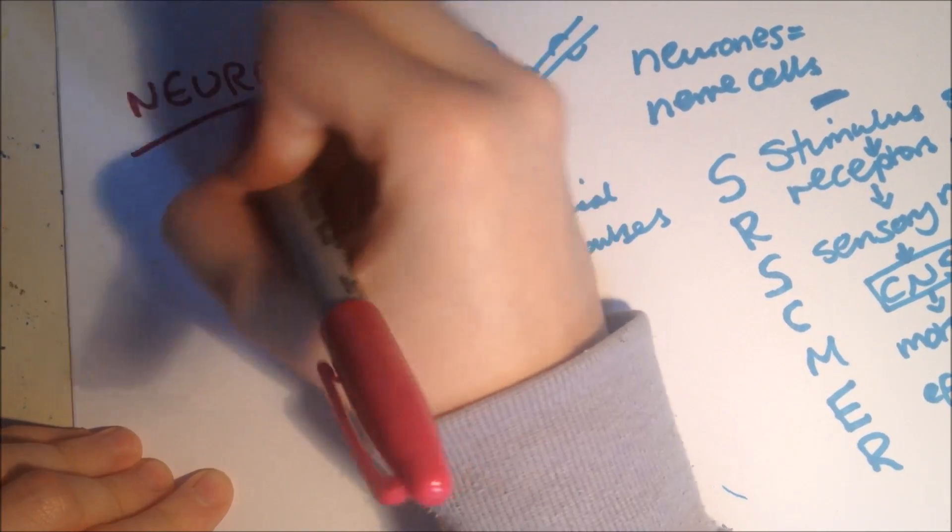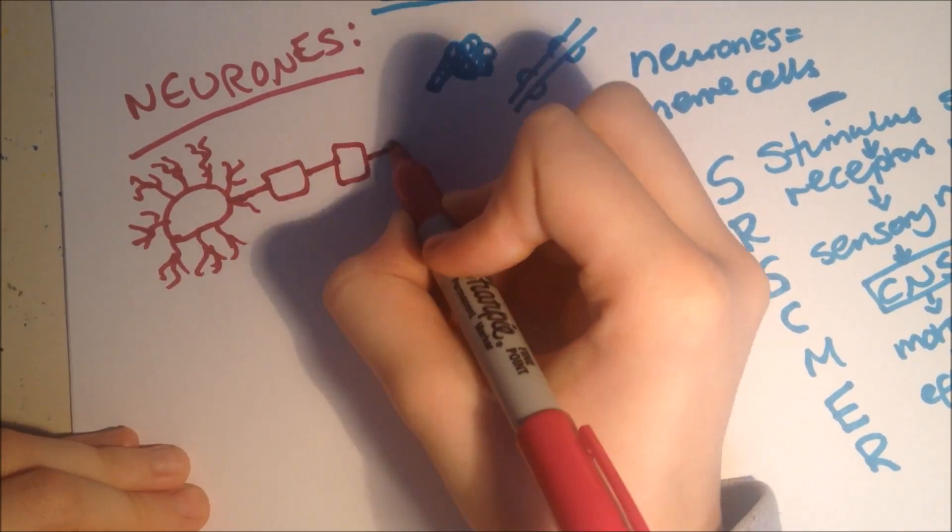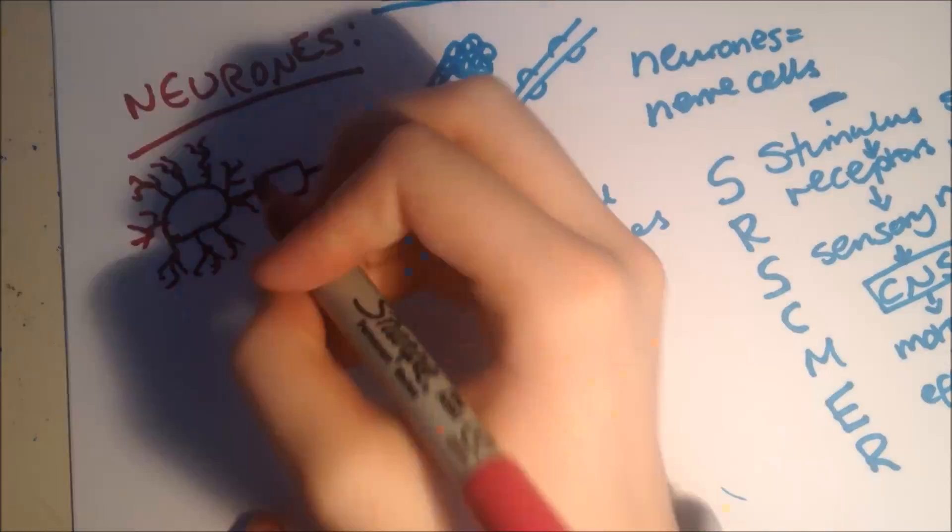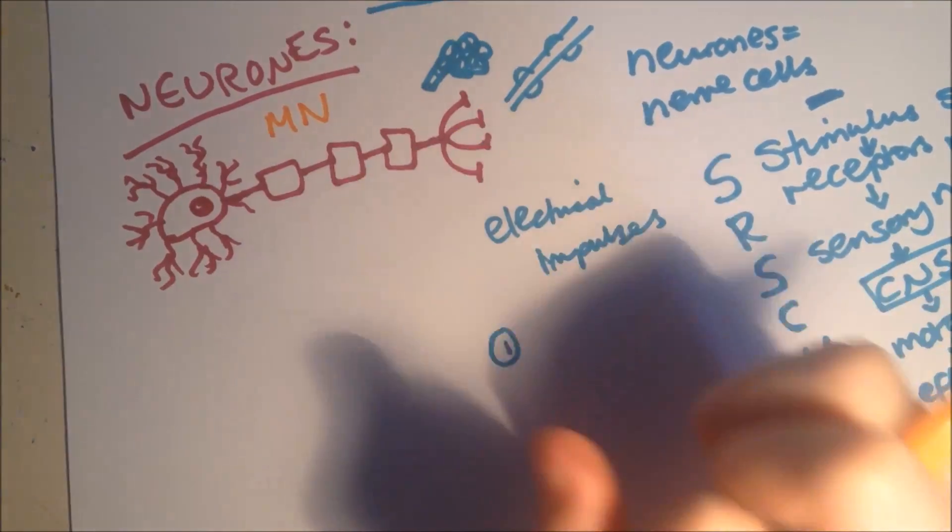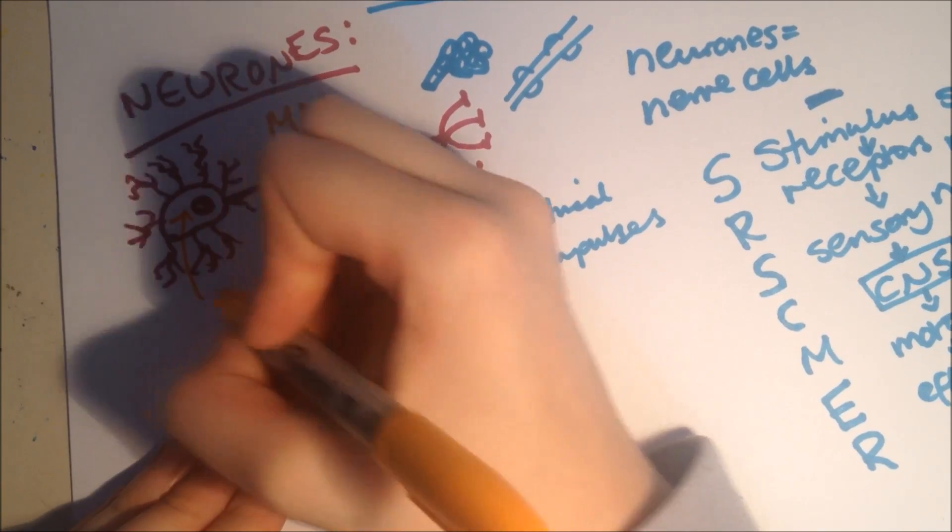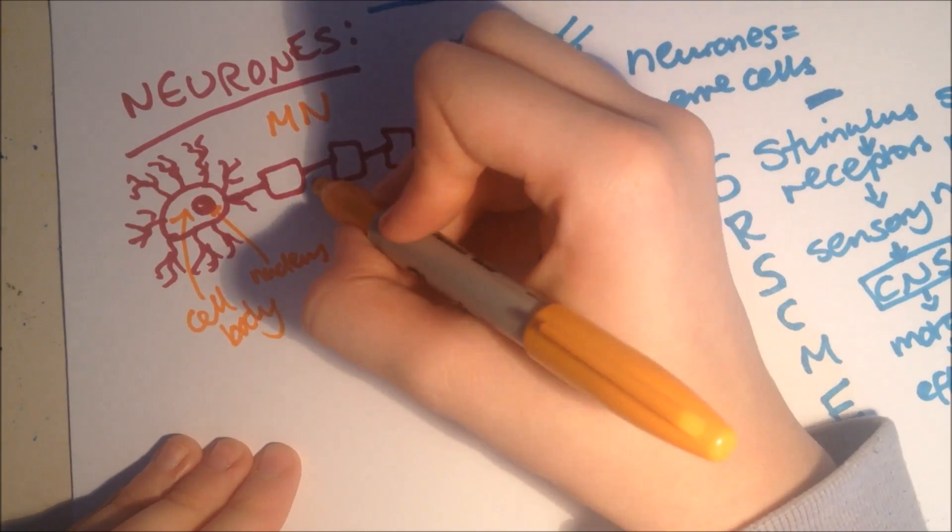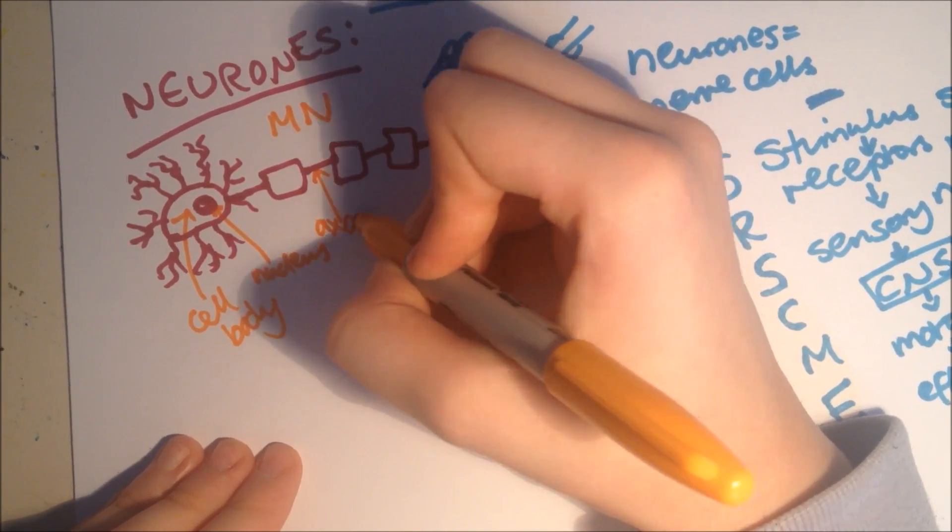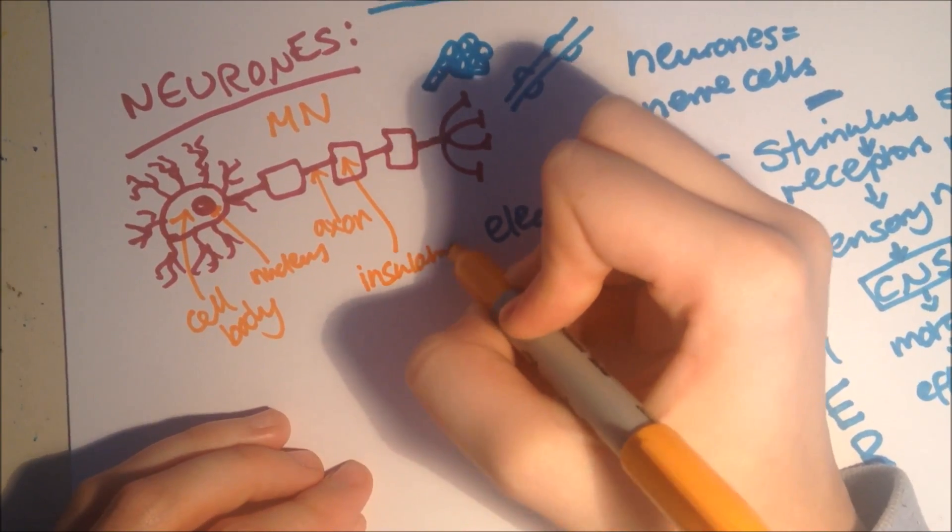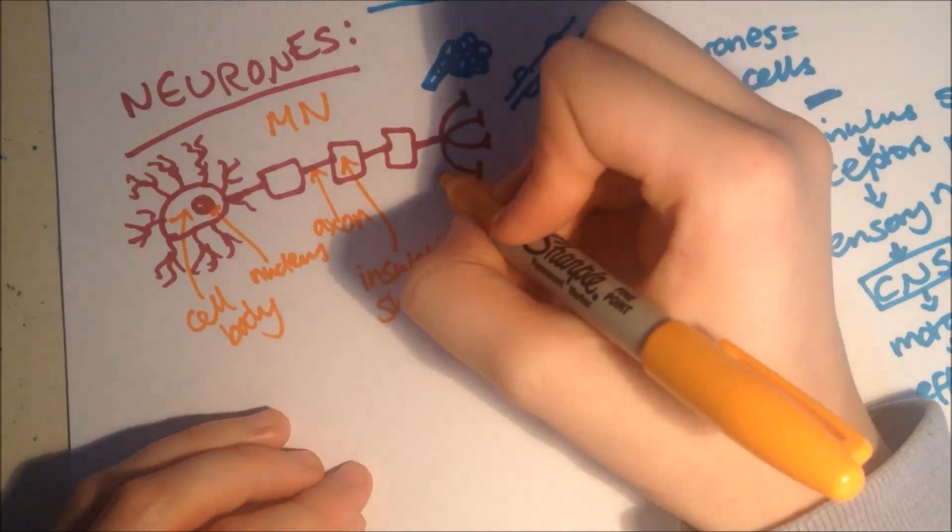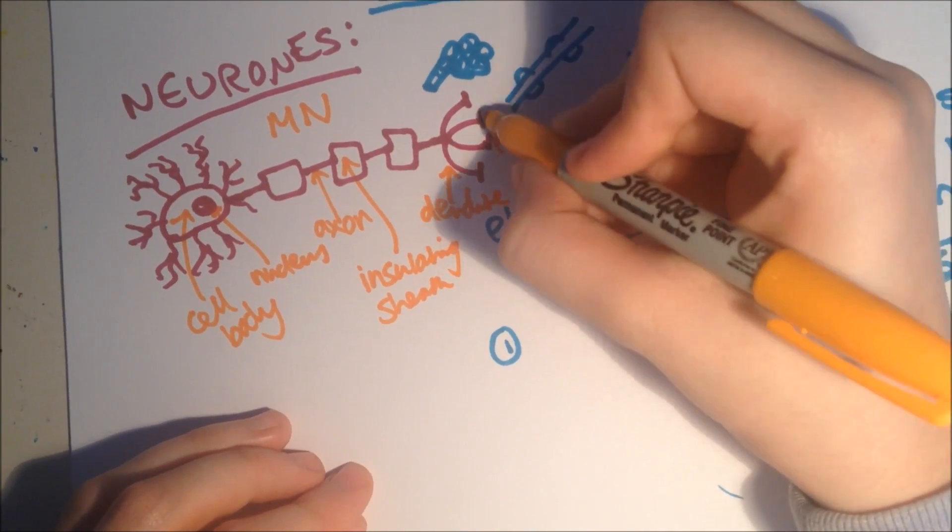Okay, so neurons transmit information around the body as electrical impulses. So, it looks like this. Okay, great diagram here. So, this is a motor neuron. So, this part, is just the cell body, with a nucleus. Here we have an axon. So, the impulses travels down. And, this is called an insulating sheath. A branched ending, which is also known as a dendrite. And, finally, these bits in the end, just here, called synapses.